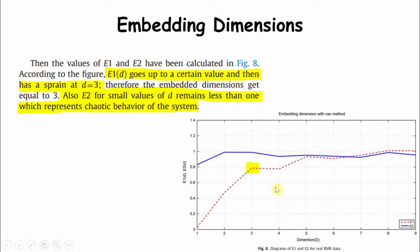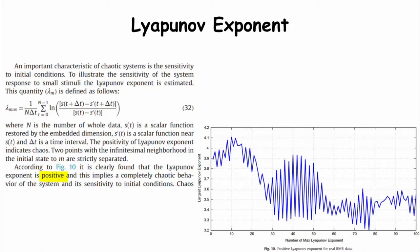E1 goes up to a certain value and then has a spring at d equals 3. An important characteristic of a chaotic system is sensitivity to initial conditions. To illustrate the sensitivity of the system response to a small stimulus, the Lyapunov exponent is estimated. According to this figure, it is clear that the Lyapunov exponent is positive, implying completely chaotic behavior of the system sensitive to initial conditions. KS indexes — such as the non-integer value of correlation dimension, positive Lyapunov exponent, and E2 less than 1 — all indicate completely chaotic behavior of the RMR data series.